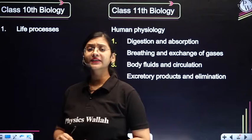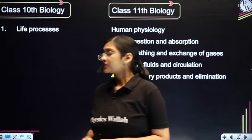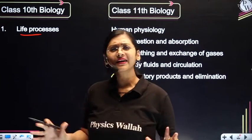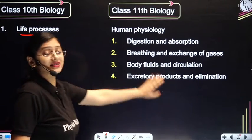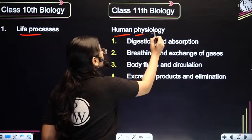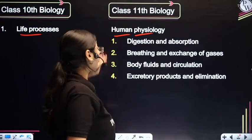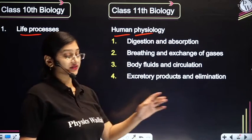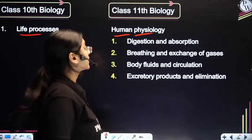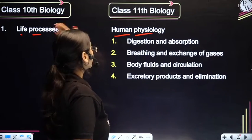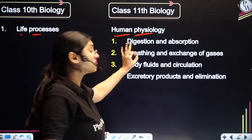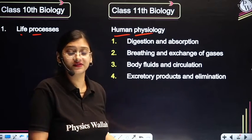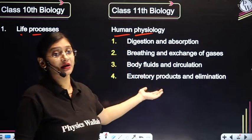If I consider class 10th biology, the first chapter is Life Processes. By understanding this chapter well, you will better understand the whole unit of Human Physiology in 11th standard, which has four chapters: Digestion and Absorption, Breathing and Exchange of Gases, Body Fluids and Circulation, and Excretory Products and Elimination. A lot of NEET exam questions come from this unit.